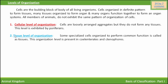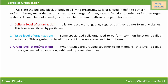The second is tissue level of body organization. Some specialized cells organize to perform a common function — this is called a tissue. This level of organization is present in coelenterates and ctenophores.